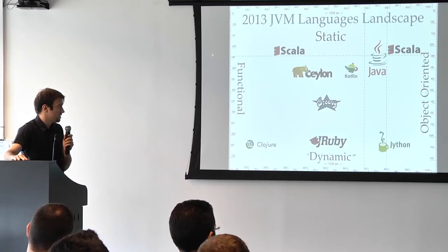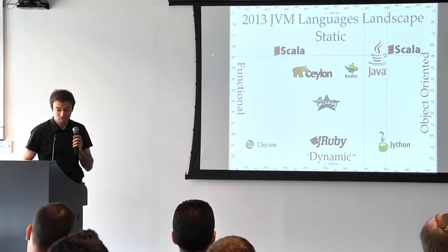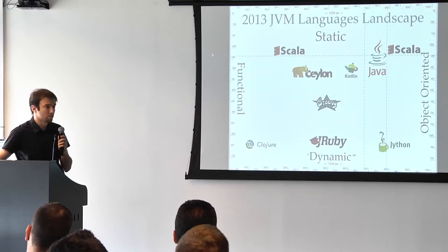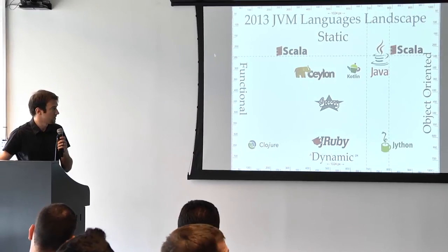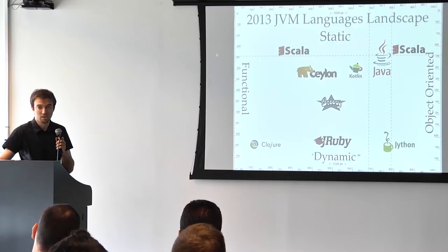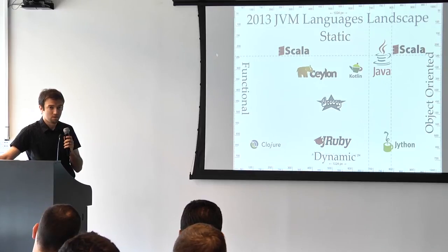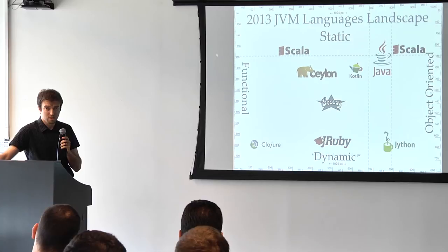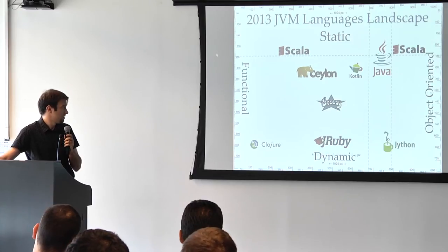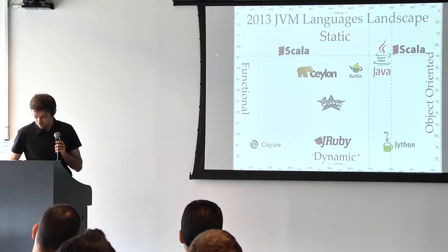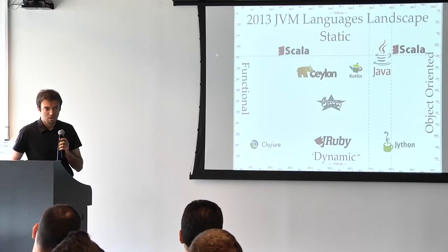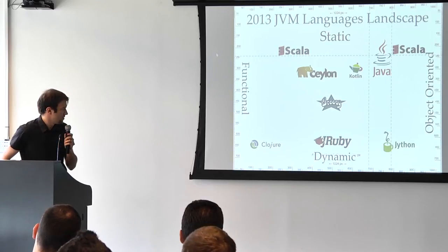Groovy is a dynamic language that started more with the target of being very much compliant to the Java syntax, make it more dynamic and lightweight. The last release of Groovy also supports stronger typing. Clojure is a Lisp dialect that is basically compiled to JVM. Akamai uses Clojure, for example.